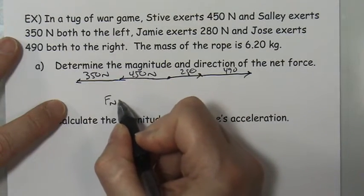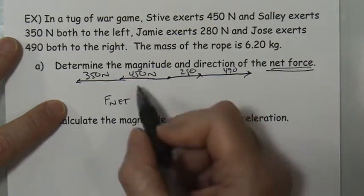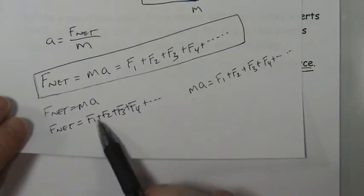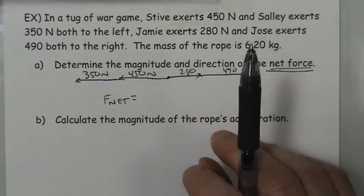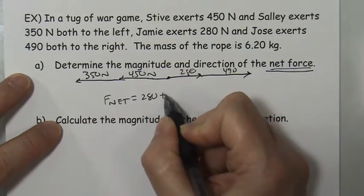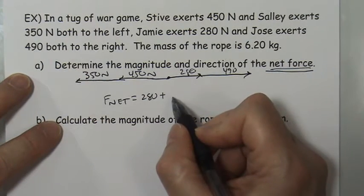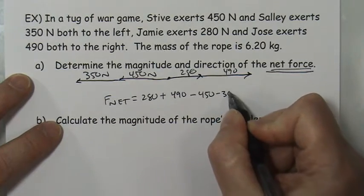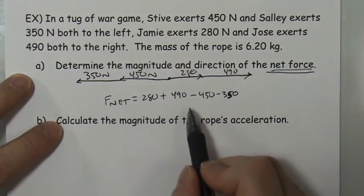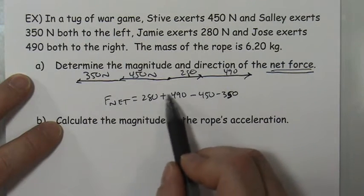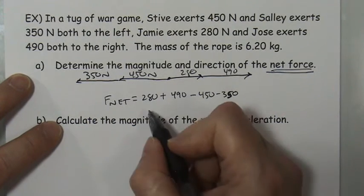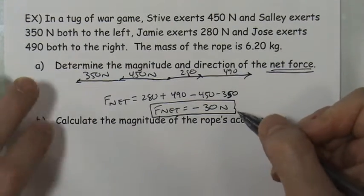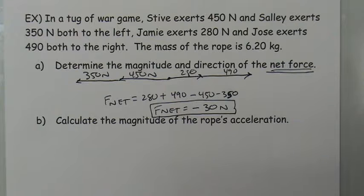We're asked for the net force, and there are two ways to get it: using mass and acceleration, or adding up the individual forces. In this problem we'll add up the individual forces. Forces pointing left get a negative sign and forces pointing right get a positive sign. The left forces added up to 800, but Jose is 30 Newtons short since he needs to supply 520 Newtons, so the net force equals negative 30 Newtons — a force of 30 Newtons to the left.